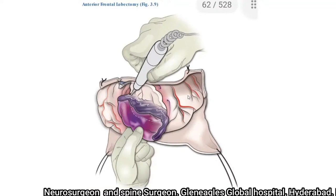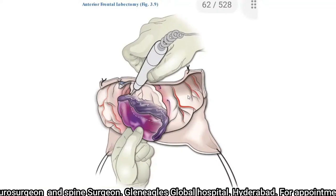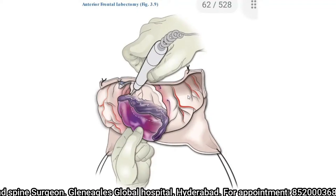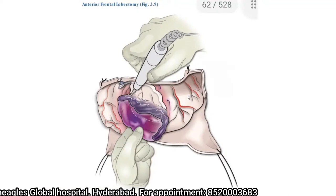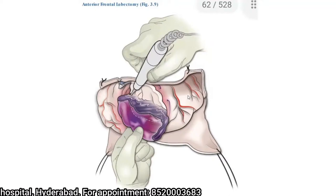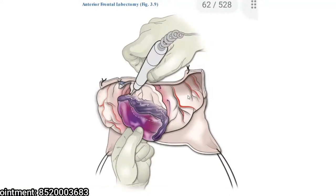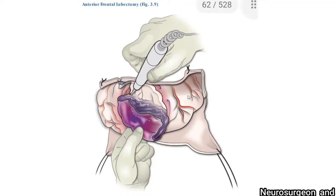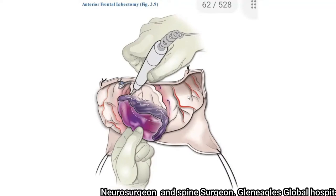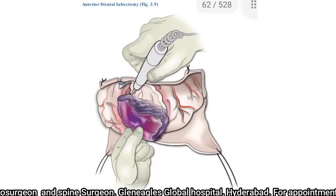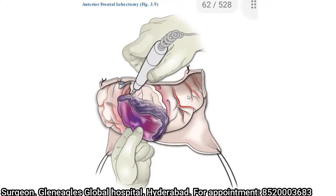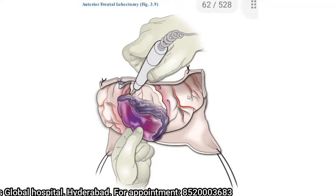For frontal lobectomy, the margin of resection depends on the size and appearance of the contused frontal lobe. If the contusion is diffuse, one may begin the cortical incision seven to eight centimeters from the frontal pole and extend laterally to the level of the lesser wing of the sphenoid. The medial aspect of the cortical incision should be made where the frontal lobes are clearly separate.